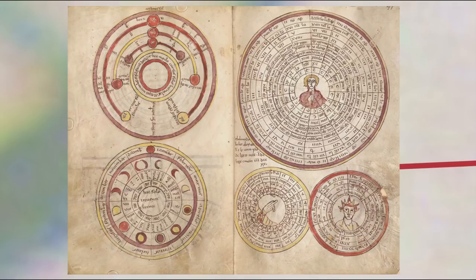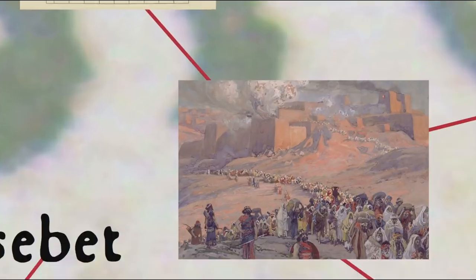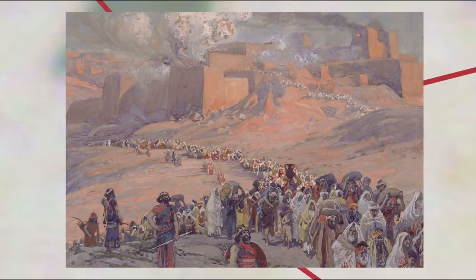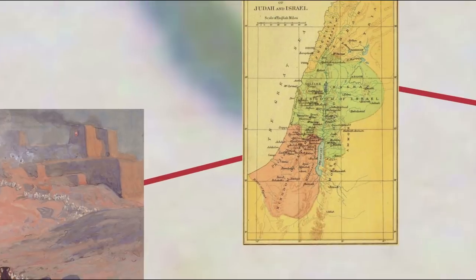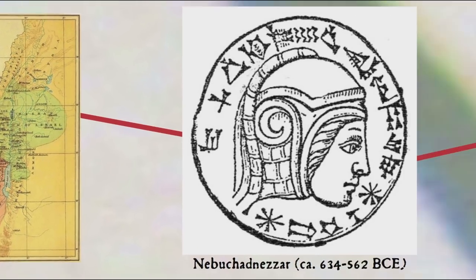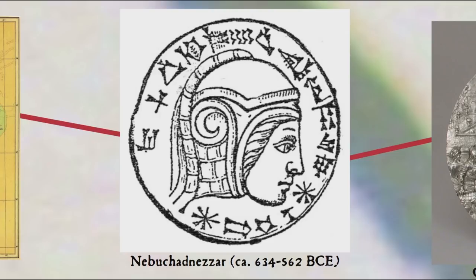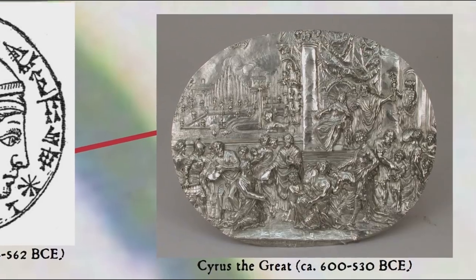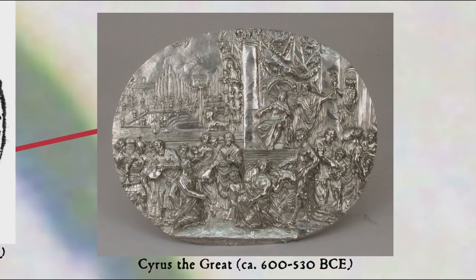You see, 235 lunar months coincides almost exactly with 19 solar years. The reason the Jewish calendar is based on the Babylonian calendar is the Babylonian captivity, in which the people of the kingdom of Judah were taken as captives into Babylon during the reign of King Nebuchadnezzar sometime around the beginning of the 6th century BCE, until they were allowed to return home by Cyrus the Great, the Persian emperor who conquered Babylon in 539 BCE.